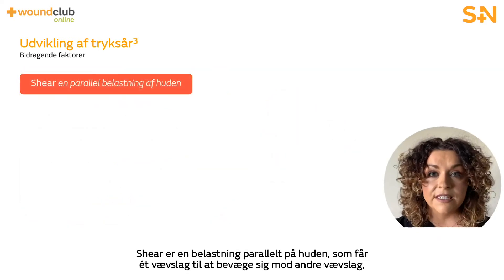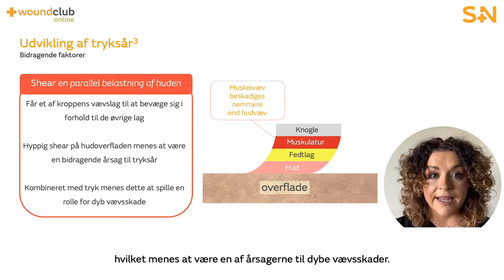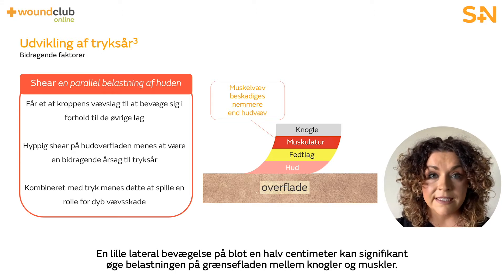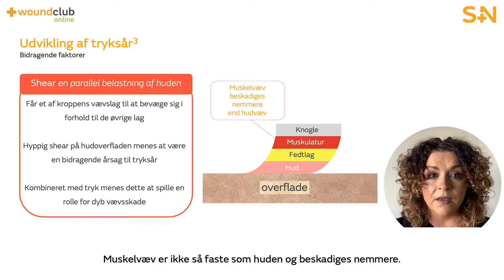Shear is a force parallel to the skin which causes one layer of the body tissue to move in relation to others, and is believed to play a role in deep tissue pressure injury. A slight lateral movement of only half a centimetre can significantly increase force at the bone-muscle interface. Muscle tissues are not as stiff as the skin and are more easily damaged.